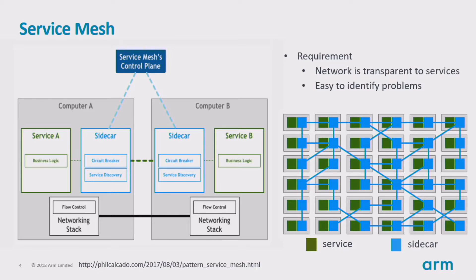Generally, a service mesh is an infrastructure layer for handling inter-service communication. This layer is used to implement reliable request delivery for cloud-native applications with complex service topologies. It is typically a set of lightweight network proxies deployed with the application but transparent to it. The service mesh differs from the traditional infrastructure layer in that it forms a distributed interconnected proxy network, deploying network proxies in the form of sidecars. In the diagram, the green represents services and the blue represents the sidecar proxy.